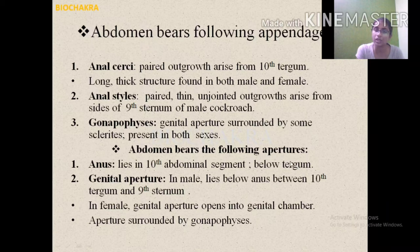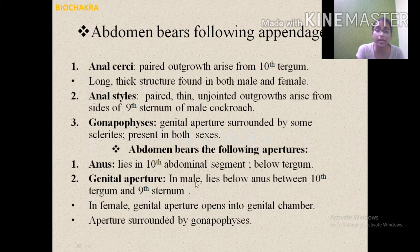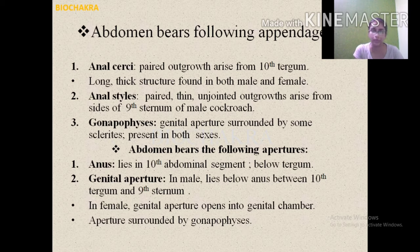Now the apertures present in the abdomen. The first is the anus, found in the 10th abdominal segment below the tergum — it expels waste from the body. The second aperture is the genital aperture. In males, it is located below the anus, between the 10th tergum and 9th sternum. In females, it opens into the genital chamber and is surrounded by the gonapophysis.